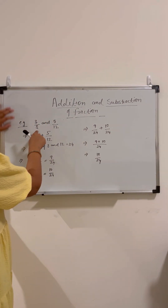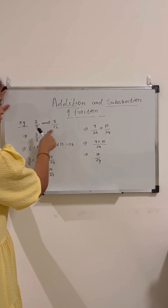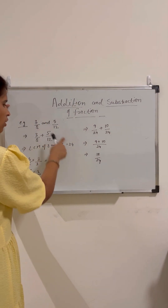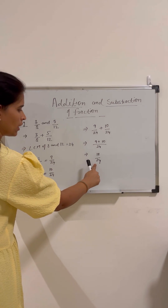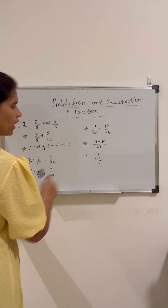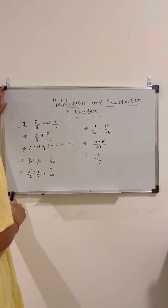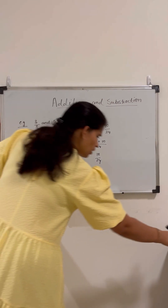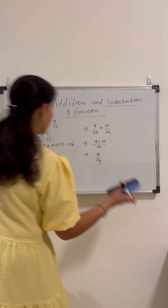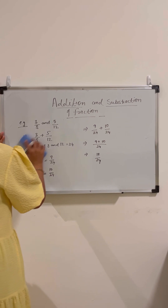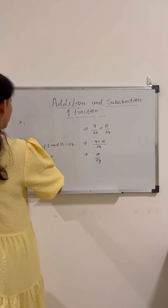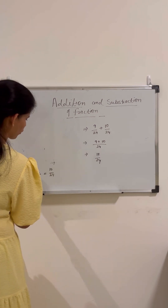So if we add 3 by 8 and 5 by 12, we get 19 by 24. The same method will apply for subtraction as well.